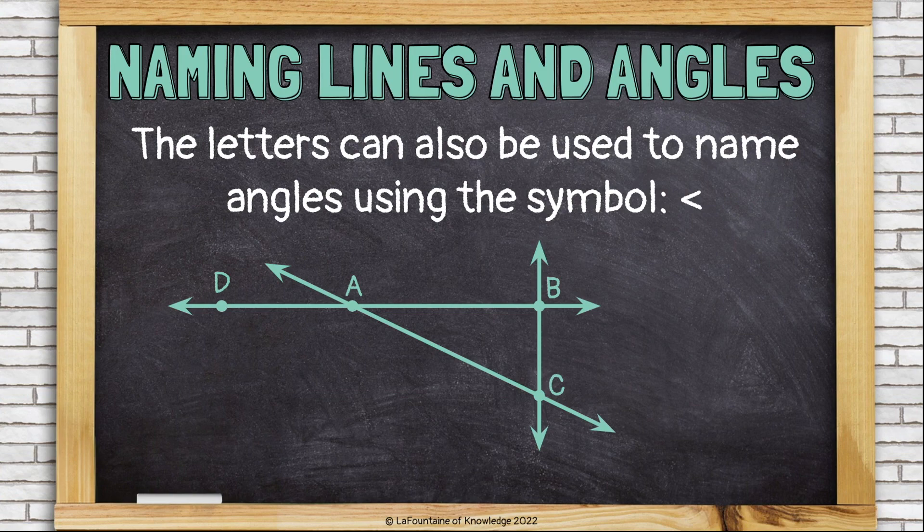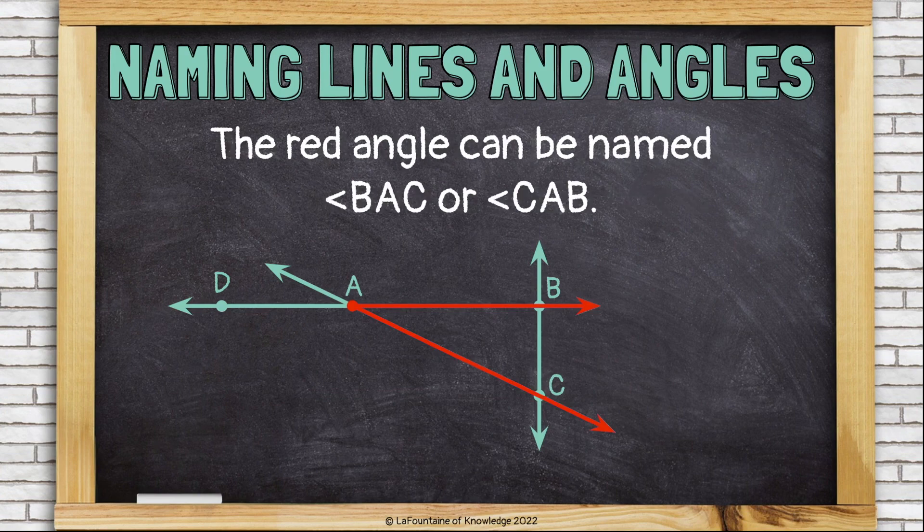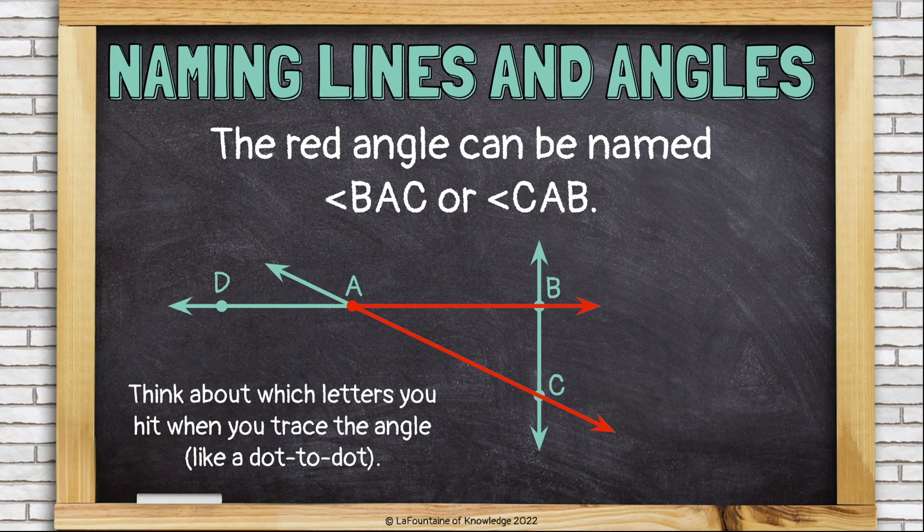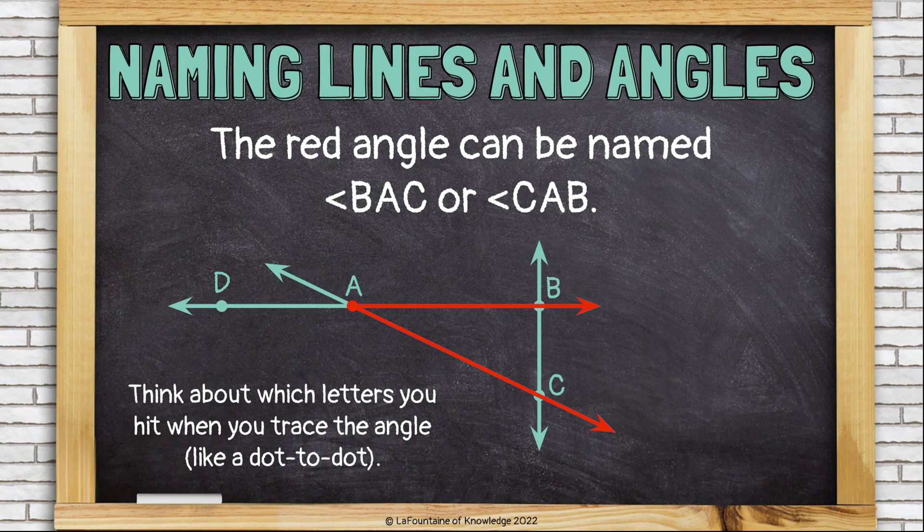The letters can also be used to name angles using an angle symbol, which kind of looks like a less than symbol. The red angle can be named angle BAC or angle CAB. Think about which letters you hit when you trace the angle like a dot-to-dot. This is an acute angle.